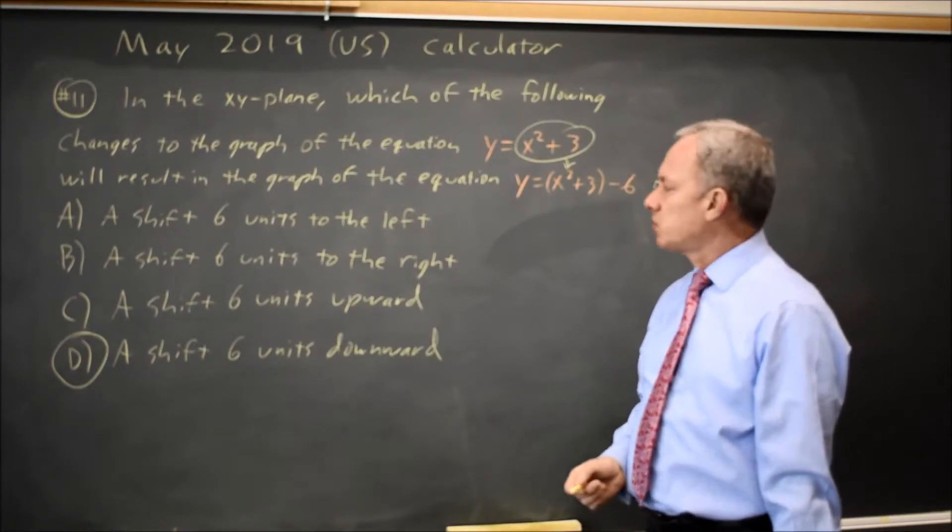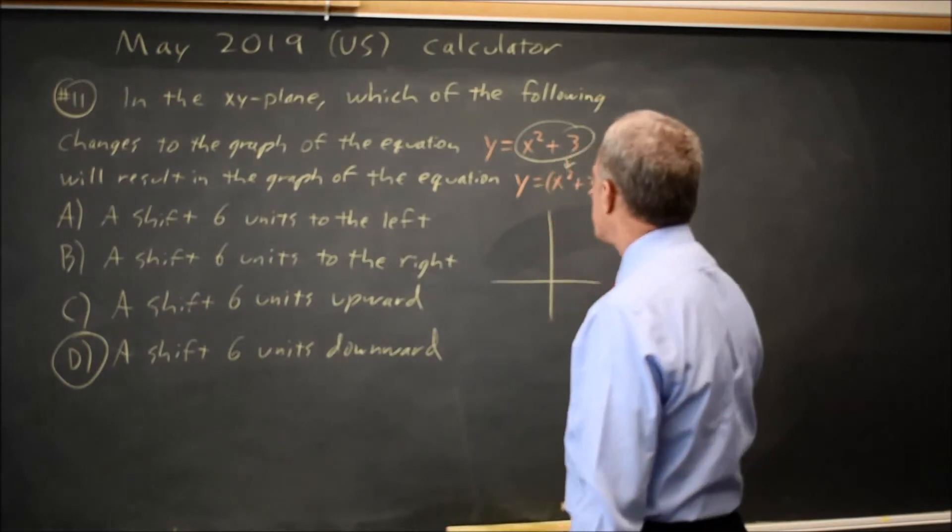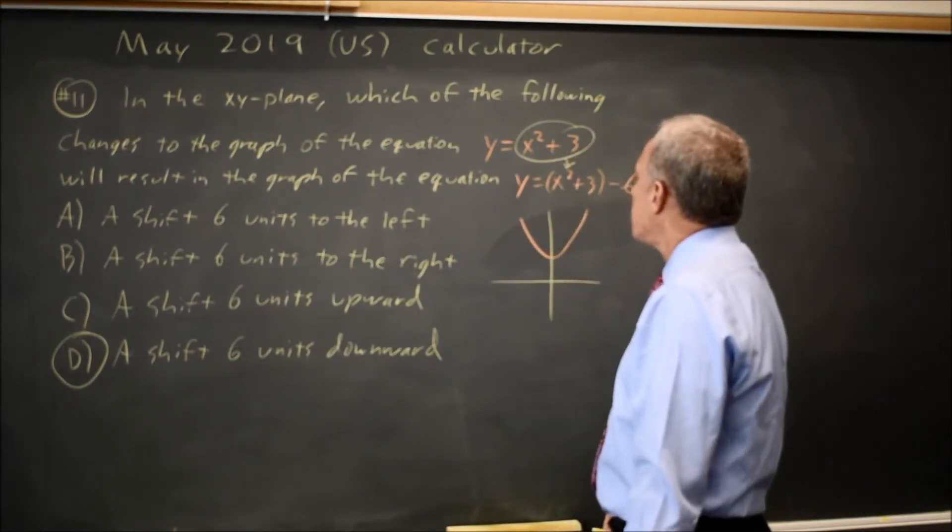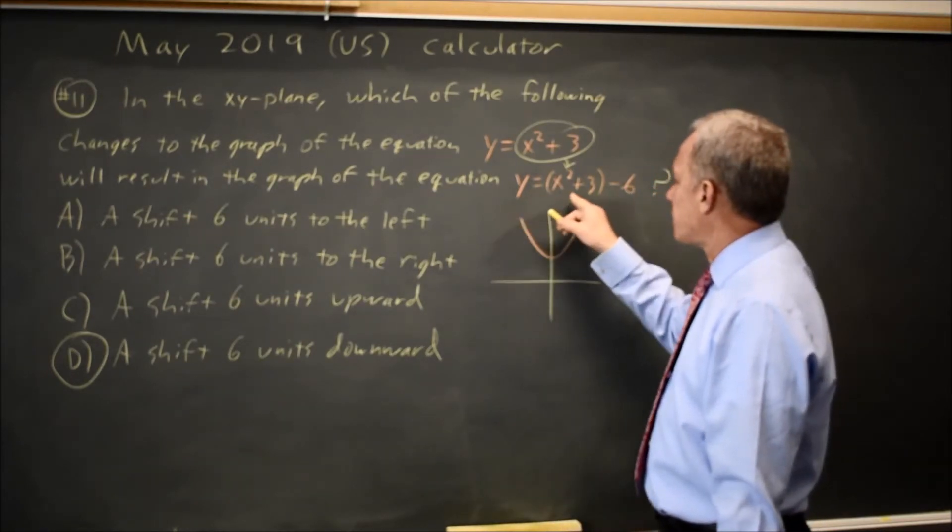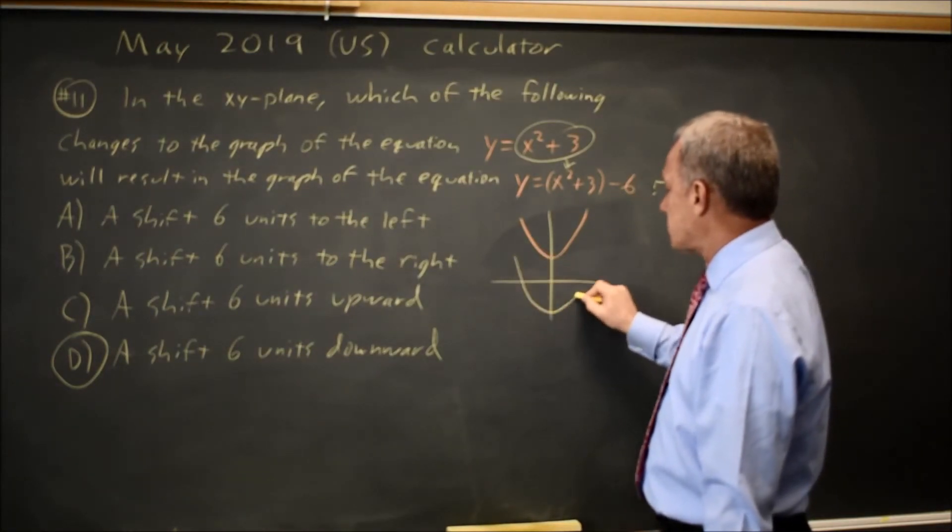If you're not sure of this, remember this is a calculator question. We can graph Y equals X squared plus 3, which looks like this on our calculator, and then in Y2 on the graphing calculator, put X squared plus 3 and then minus 6, and it looks like this.